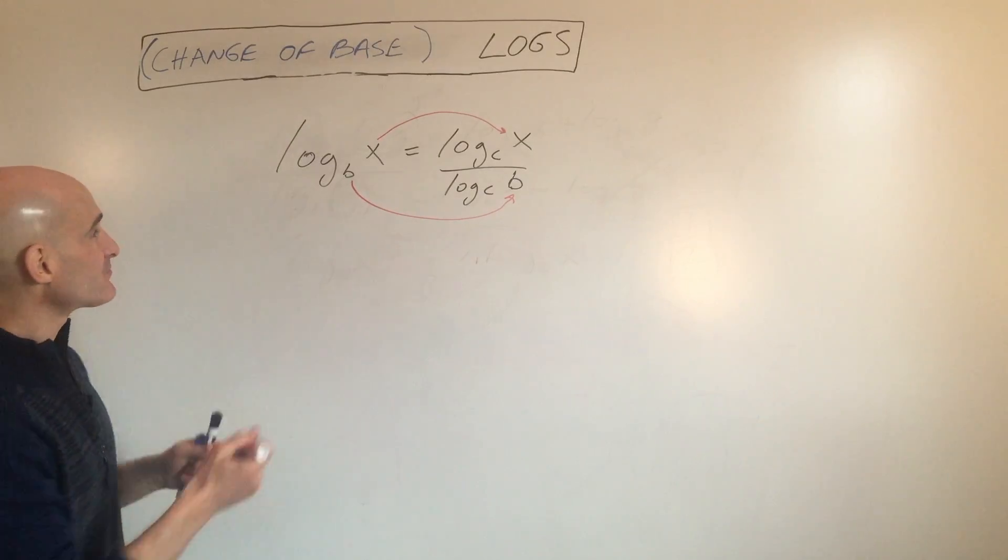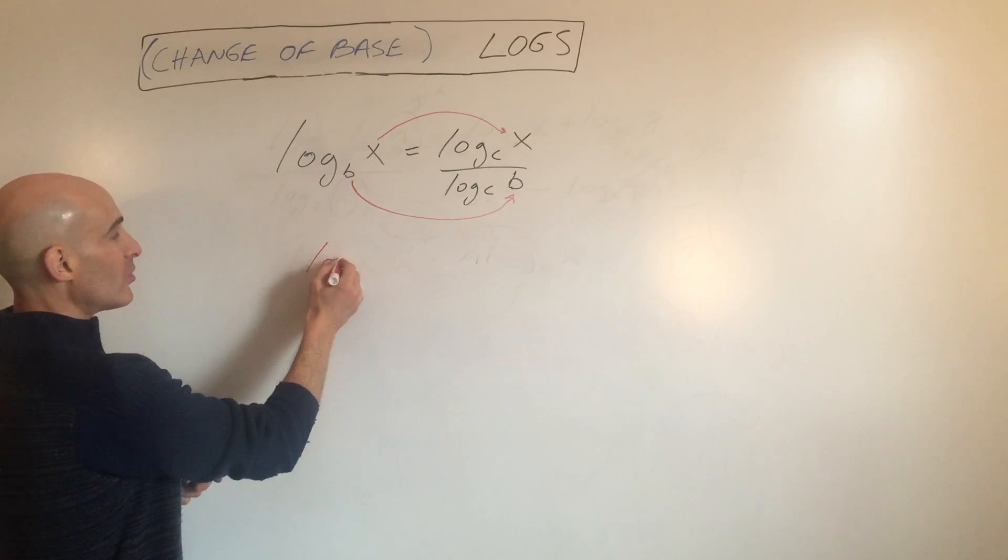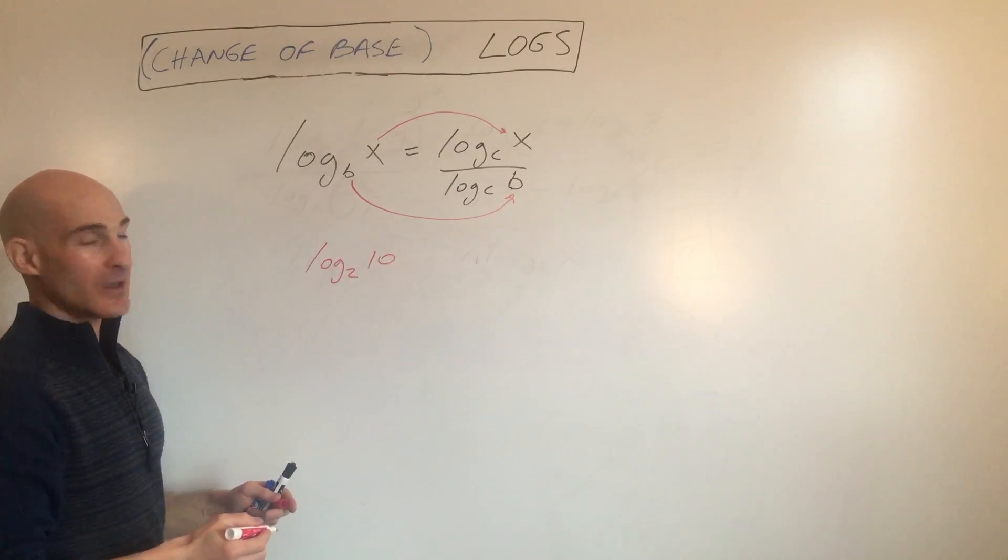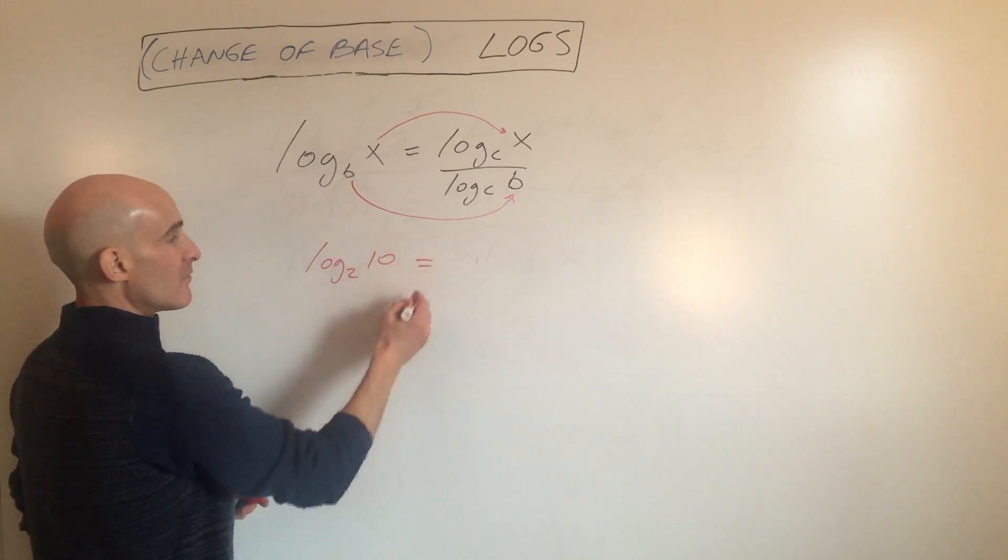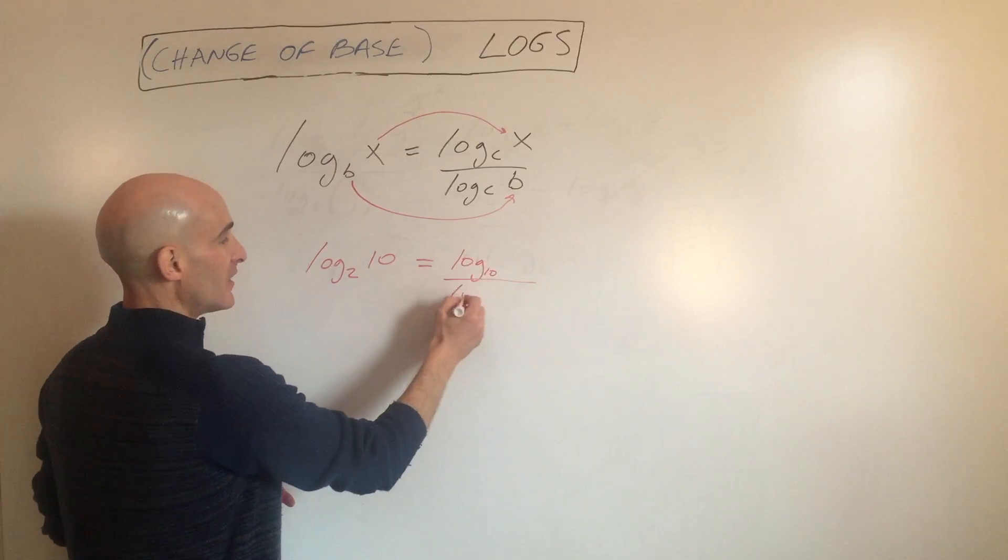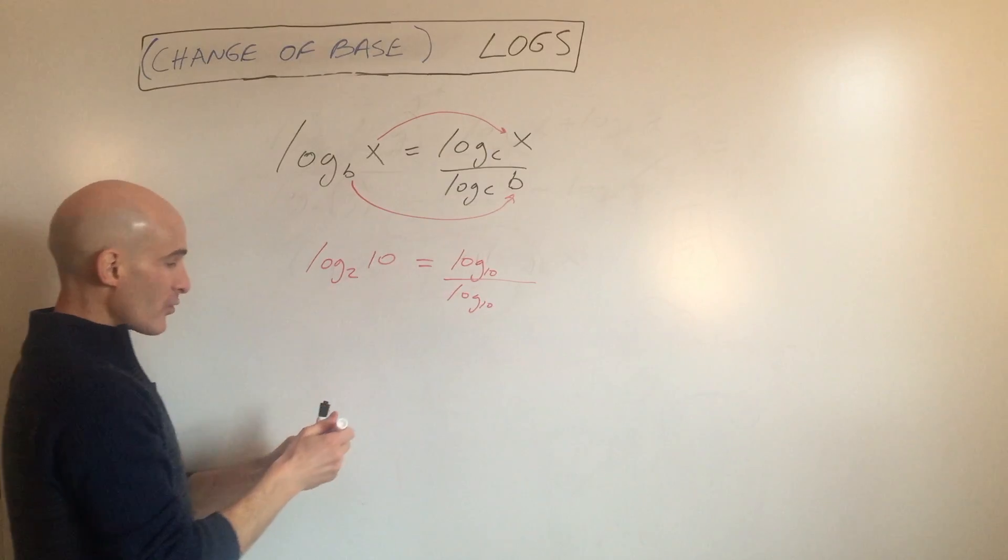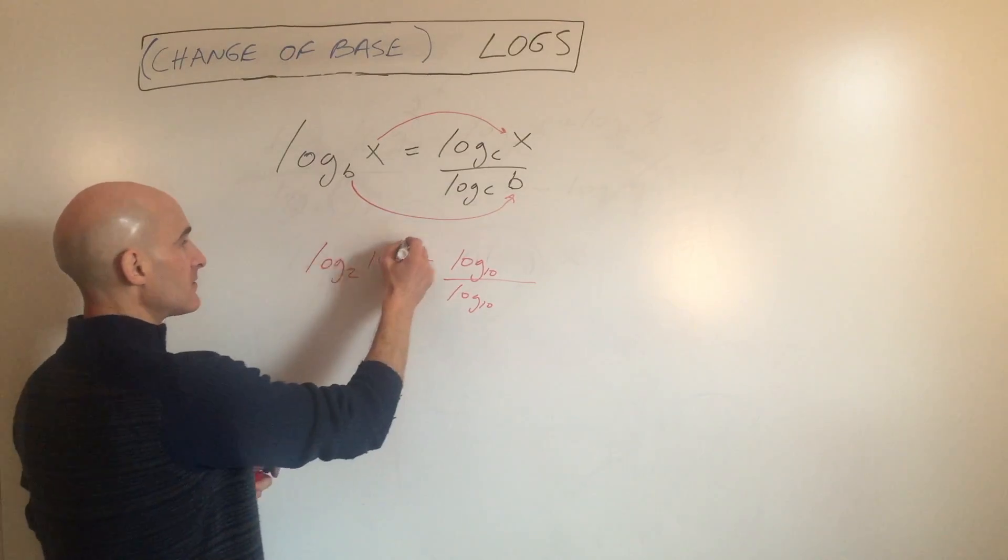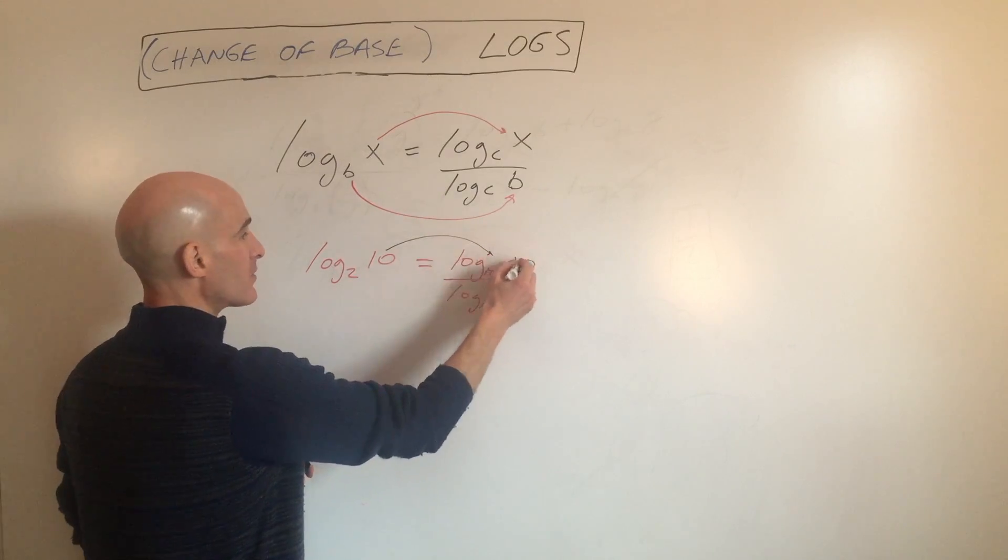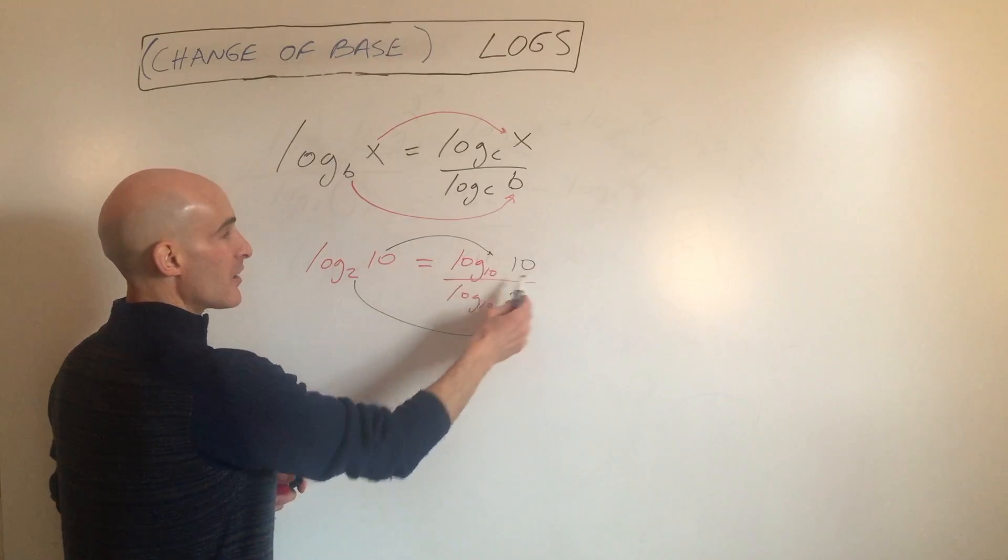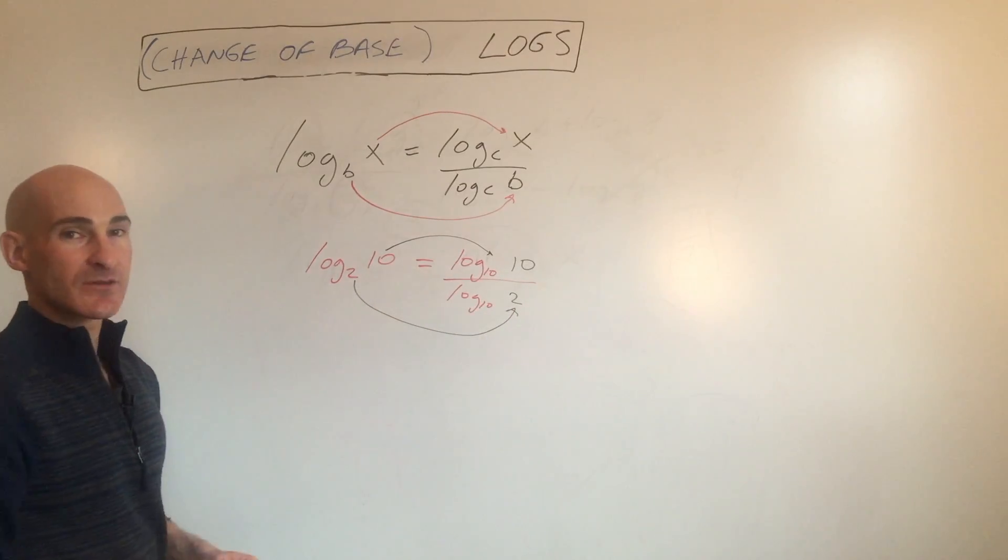I'll show you some examples. Say, for example, you have log base 2 of 10. We could write this as log base 10, and then what we're going to do is put the 10 in the numerator and the 2 in the denominator. So we get log base 10 of 10 divided by log base 10 of 2.